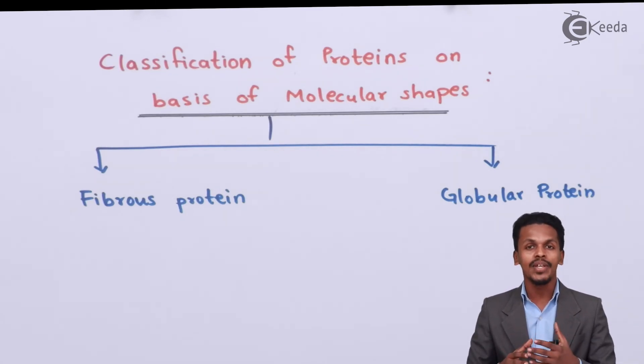Another example is insulin. Hemoglobin and insulin are very soluble in water and have different functions depending upon their structure and the sequence of the peptide linkage.